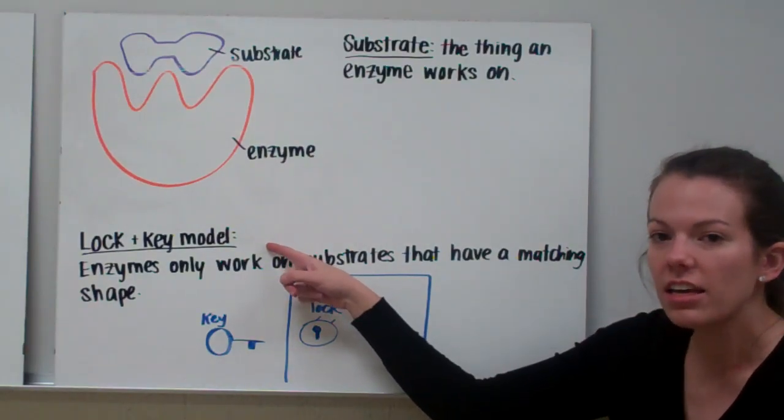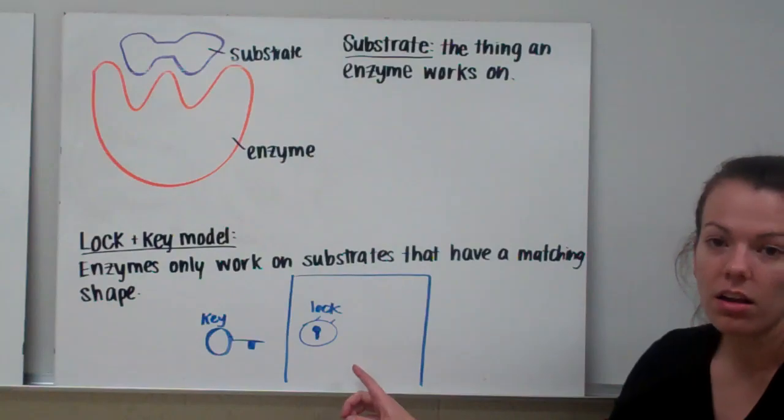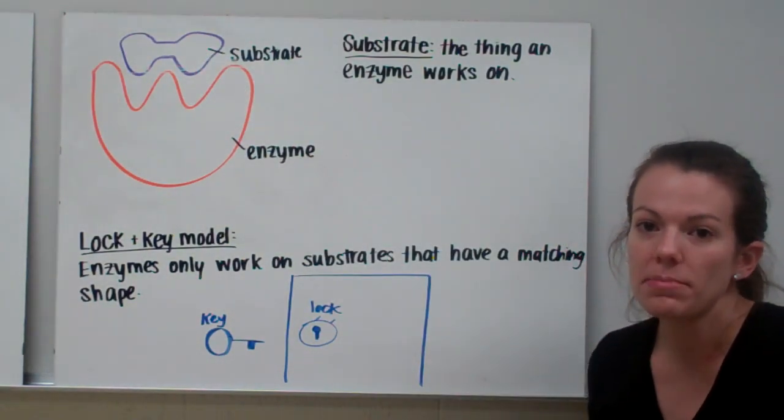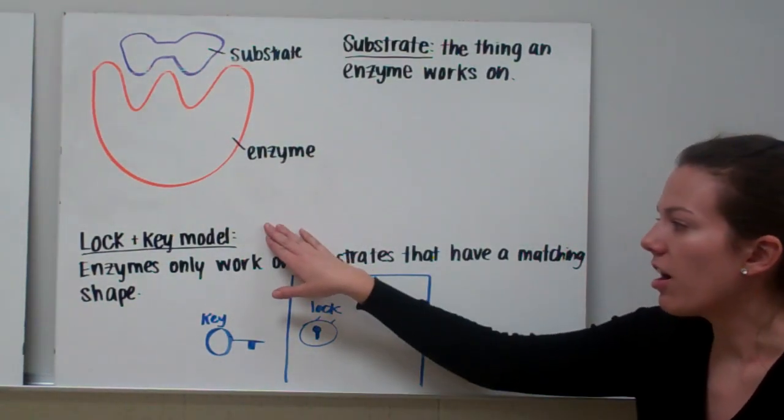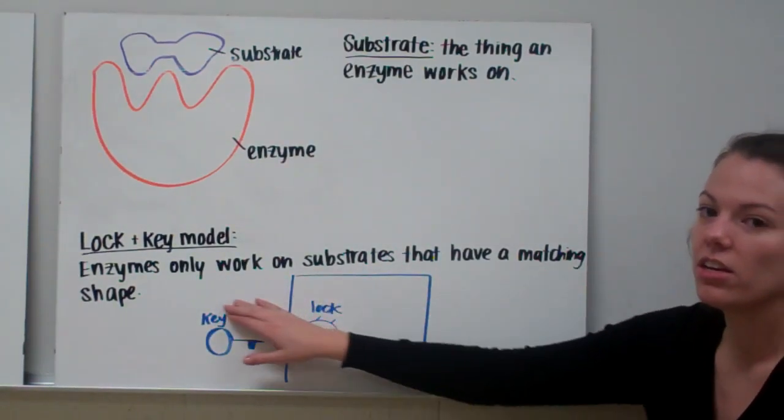So we call that the lock and key model. Just like not just any key will open up any lock, not just any enzyme will work with any substrate. Their shapes have to match. And we call that the lock and key model because enzymes only work on substrates that have a matching shape.